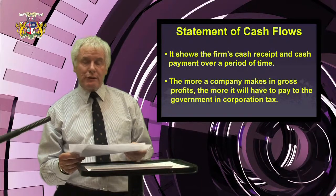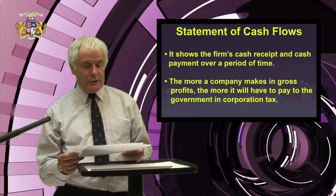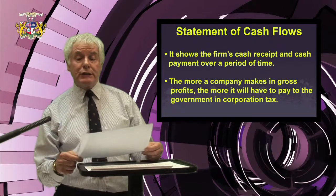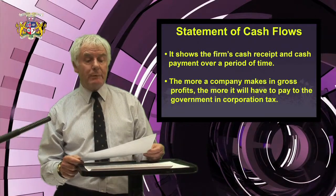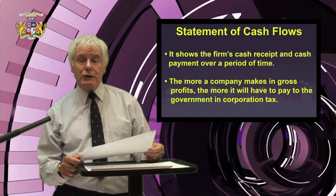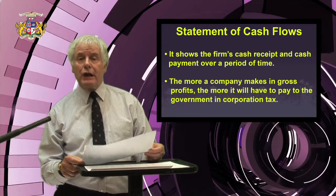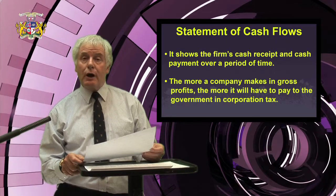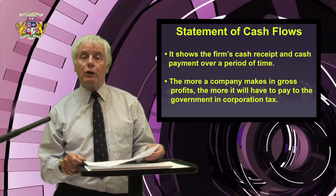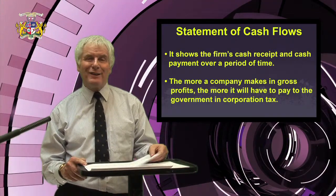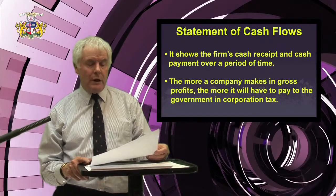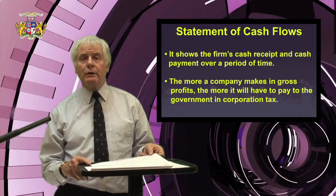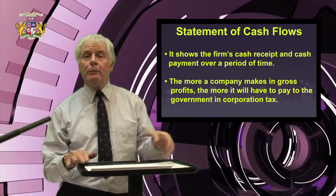The third financial document is the statement of cash flows, which shows the firm's cash receipts and cash payments over a period of time, usually 12 months. All profits made by the corporation are subject to taxation — the more a company makes in gross profits, the more it pays in corporation tax, determined on a sliding scale adjusted with each government financial budget. Theoretically, multinational conglomerates would pay higher percentages in corporation tax. However, many large companies register offices offshore in tax havens and on this basis avoid paying tax or pay only a small amount.